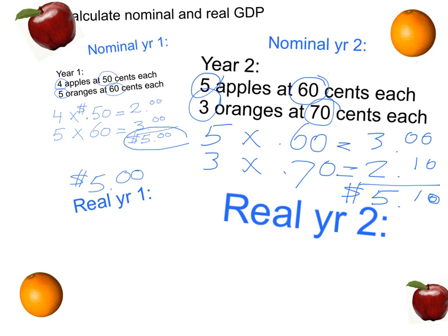Now let's calculate real GDP in year two. So we agree to use year one prices. So what we have to do is take the quantities from year two. So five for the apples. And we're going to use year one prices. So that's over here. It's 50 cents. Five times 50 cents. So the apples are worth $2.50 in real terms, in year one prices.